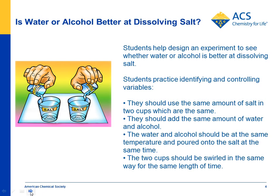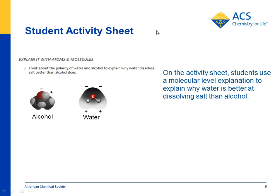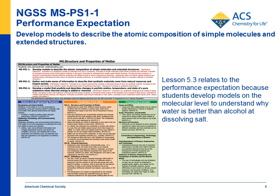The question is: why is that? Can it be explained on the molecular level? On the student activity sheet, students explain that water, which is very polar, attracts the ions in salt better than alcohol does, which has a large area that is not polar. Students have seen this before — the polar water molecule versus the less polar alcohol — and here they're applying it to the dissolving of salt.